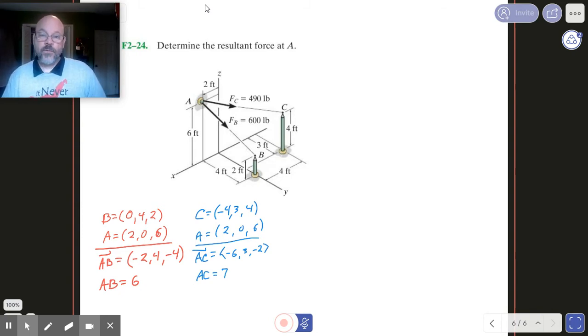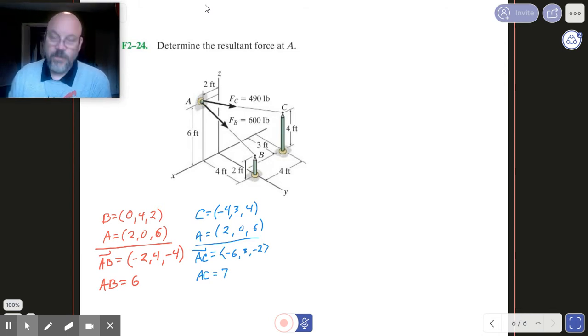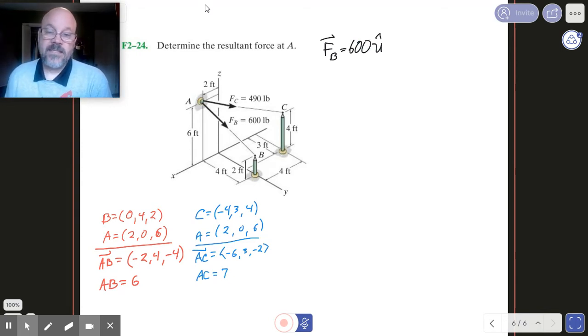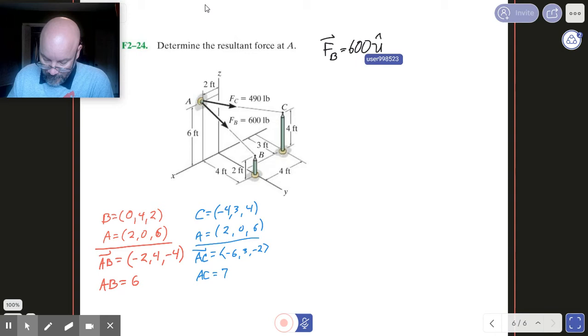So to get a vector description of FB, the force of rope B, then we're going to use our unit vector trick. So we're going to end up saying that FB is going to be that magnitude value, 600, times some unit vector. Now the unit vector it's going to be is unit vector AB. And so we need a unit vector for AB. So let's get that real quick.